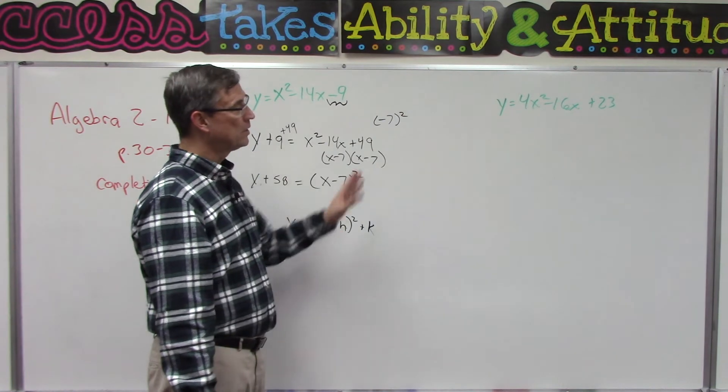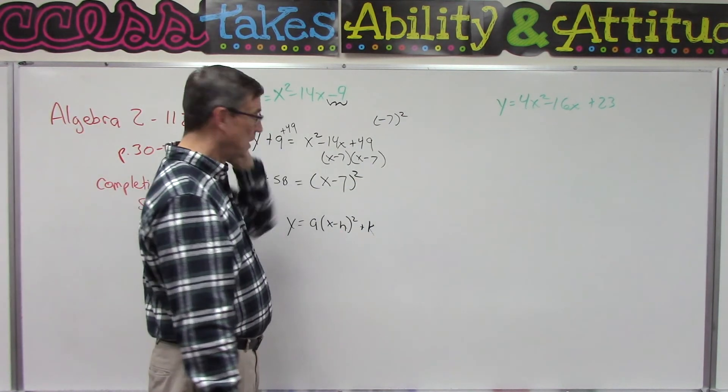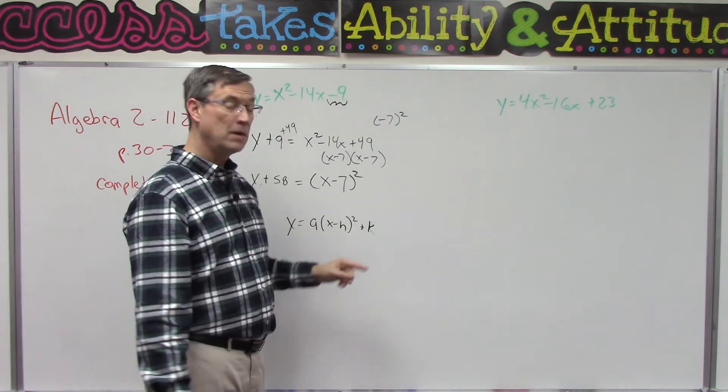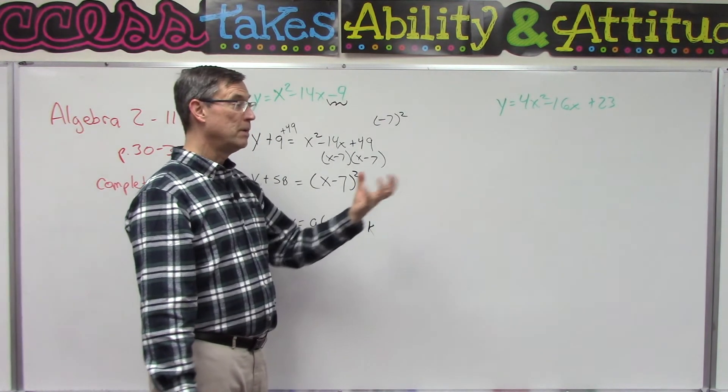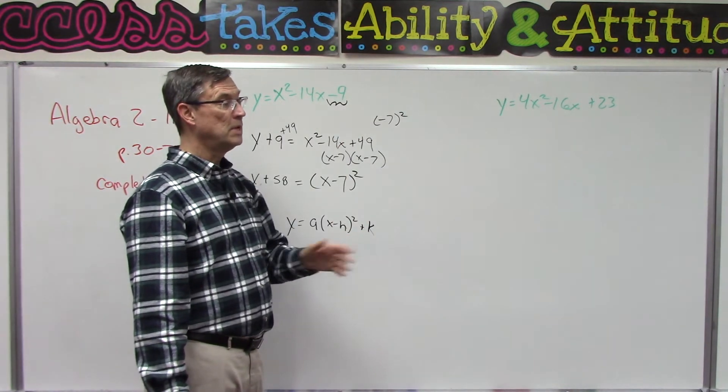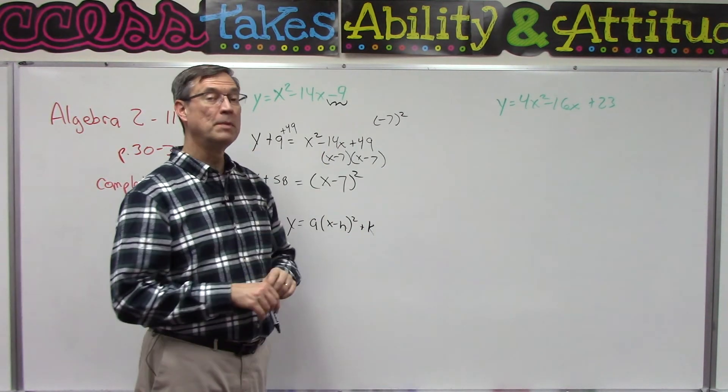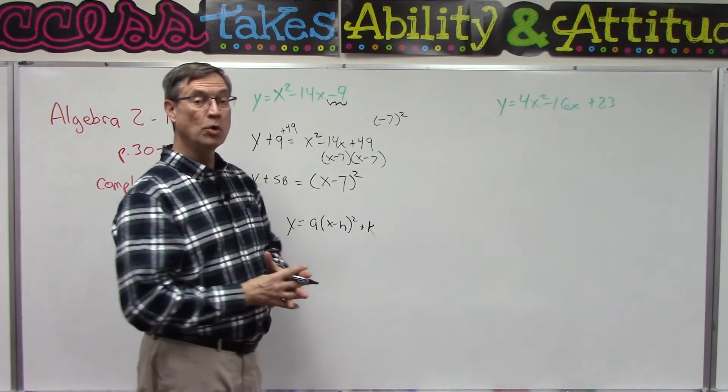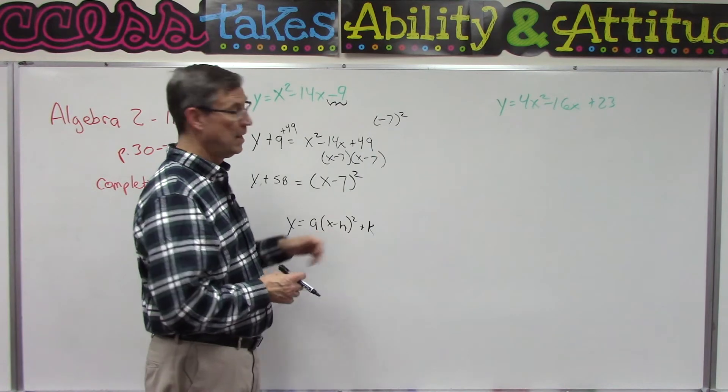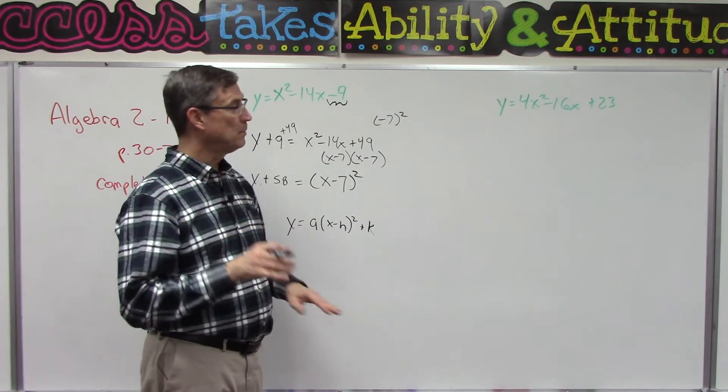But we're going to see in the next two pages after this—that's 32-33—that this h and k are very important numbers, and we can pull them out. That will tell us the axis of symmetry and the maximum and minimum points and which way the axis opens. So there's a lot of cool things that we can learn just by looking at that. But we'll do that in the next lesson.